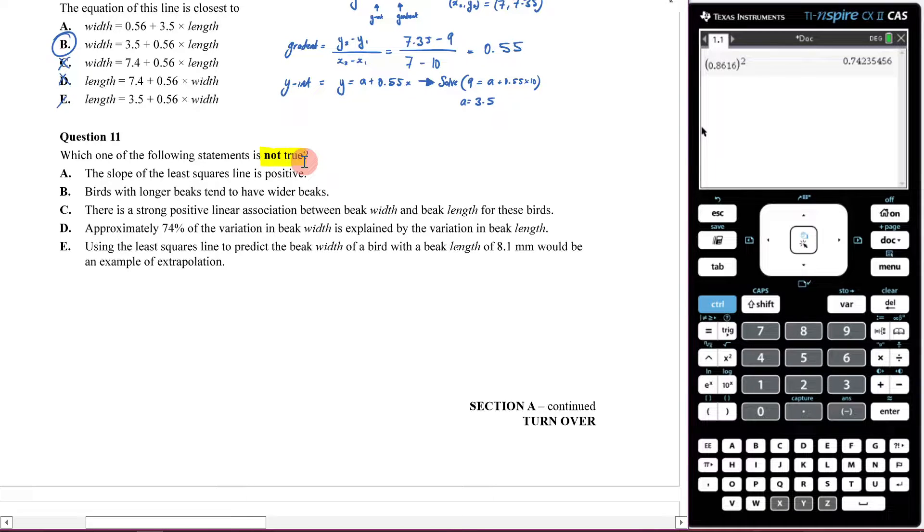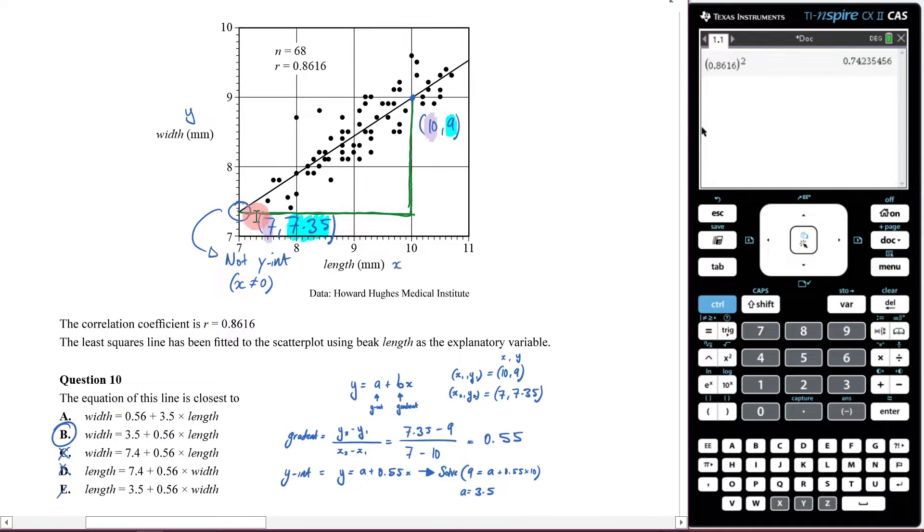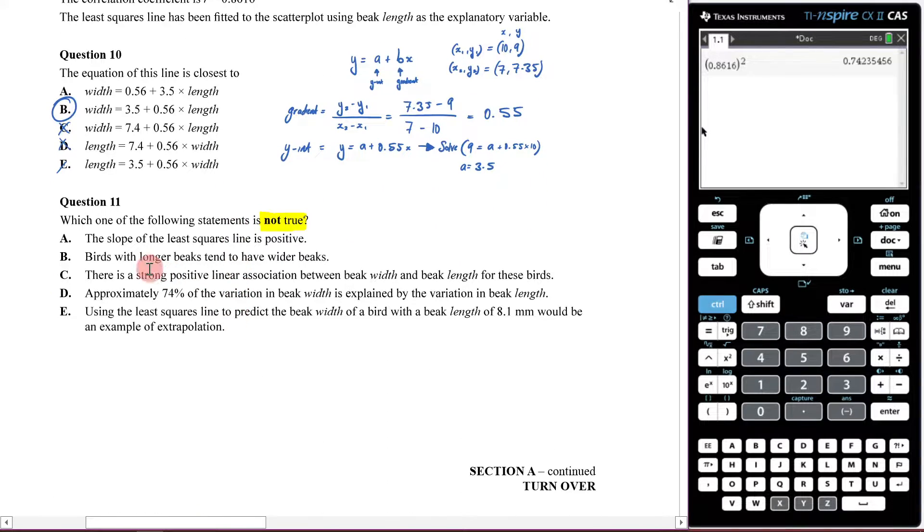The slope of the least squares line is positive. We can look and see it's going up, so it's positive. You can also look at your r value - the r value here is positive. So statement A is true, and we keep moving.